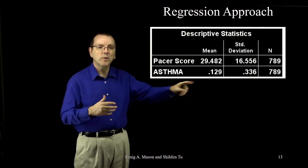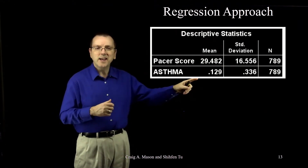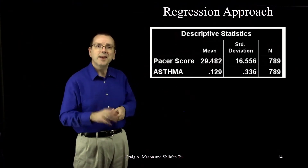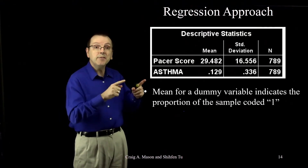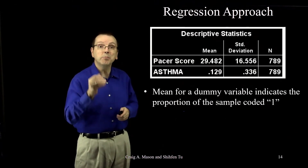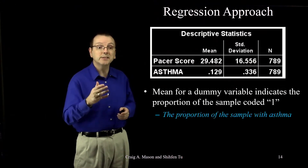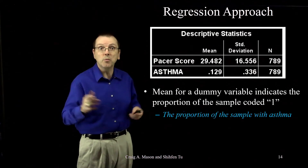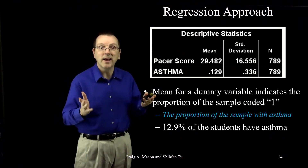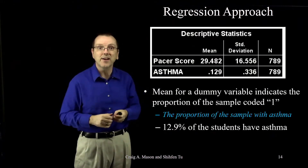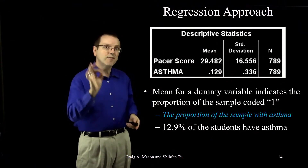Notice the mean for asthma: it is 0.129, again across all 789 students. Because it's coded zero and one, the mean for a dummy variable is the proportion of the sample that's coded one — in this case, the proportion of the sample with asthma. So you can immediately see that 12.9% of the sample has asthma. You don't have to run extra analyses to know how many students have asthma — it's right there. Very handy.